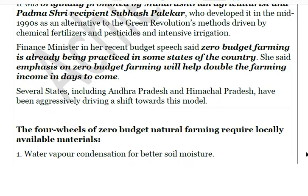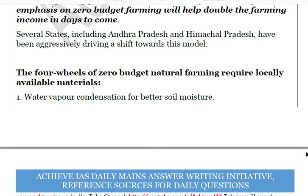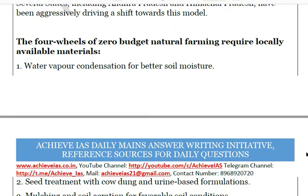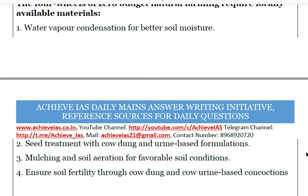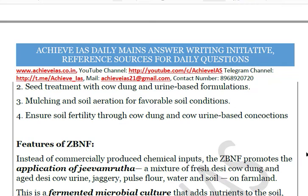The government of India has a target of doubling farmers' income by 2022, and zero budget natural farming has been identified as one way to achieve this. States like Andhra Pradesh and Himachal Pradesh are aggressively shifting to this model. The main pillars of ZBNF include water vapor condensation for better soil moisture, seed treatment using cow dung and urine-based formulations, microbial fermentations for seed treatment, mulching, soil aeration for favorable soil conditions, and ensuring soil fertility through cow dung and cow urine-based concoctions.